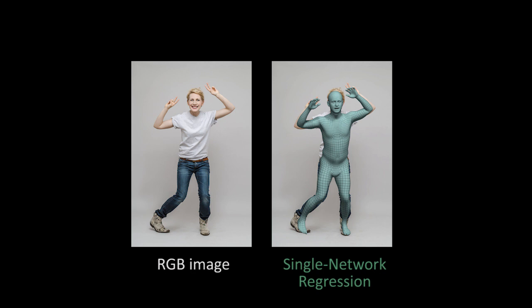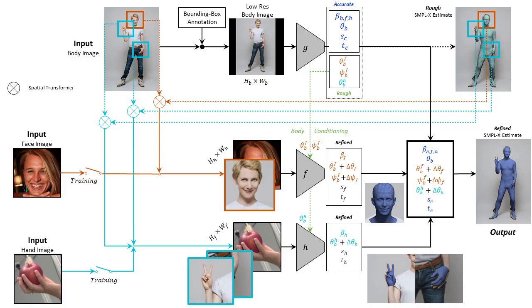To make up for this, we need to recover the lost image resolution for hands and faces. To address this, we propose EXPOSE, which estimates the parameters of a SMPL-X body model directly from image pixels. EXPOSE takes the following steps.